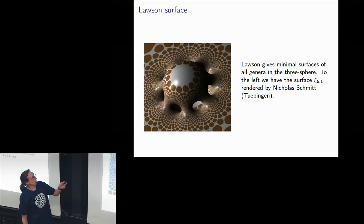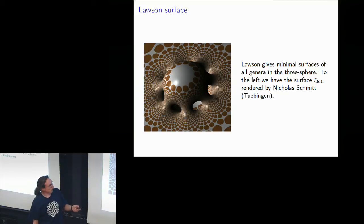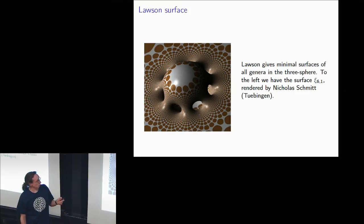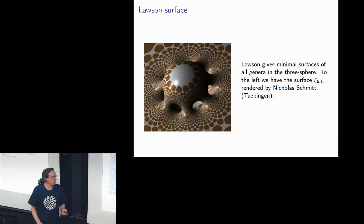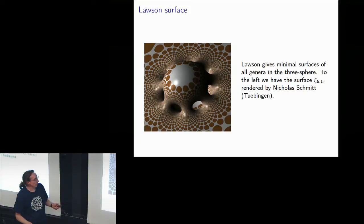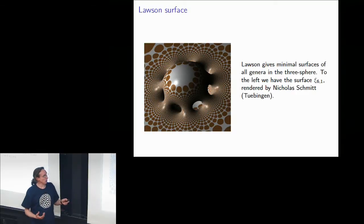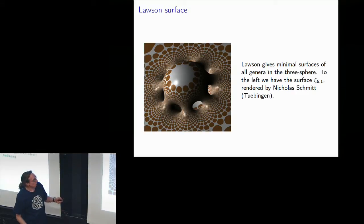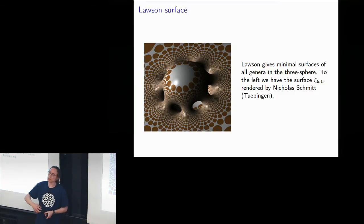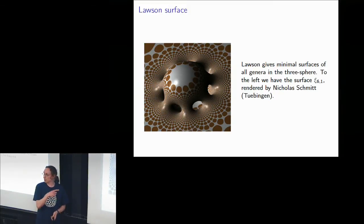Here is a picture of a higher genus surface. The render is due to Nicholas Schmidt in Tübingen. This has genus six. The genus is the number of handles — each one of these tubes is a handle. There are seven tubes total, but one just connects two spherical parts together and doesn't count. The remaining six do count as handles, which is why this has genus six.